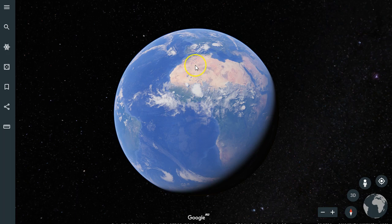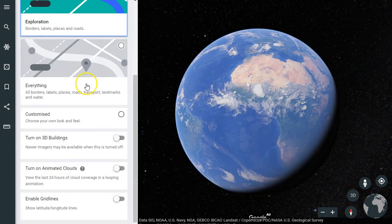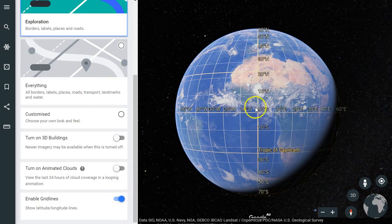Now the problem is when you first go in you can't see the grid lines. To fix that you've got this thing with three lines, you click on that and then you click on map style. Scrolling down to the bottom we can enable grid lines.